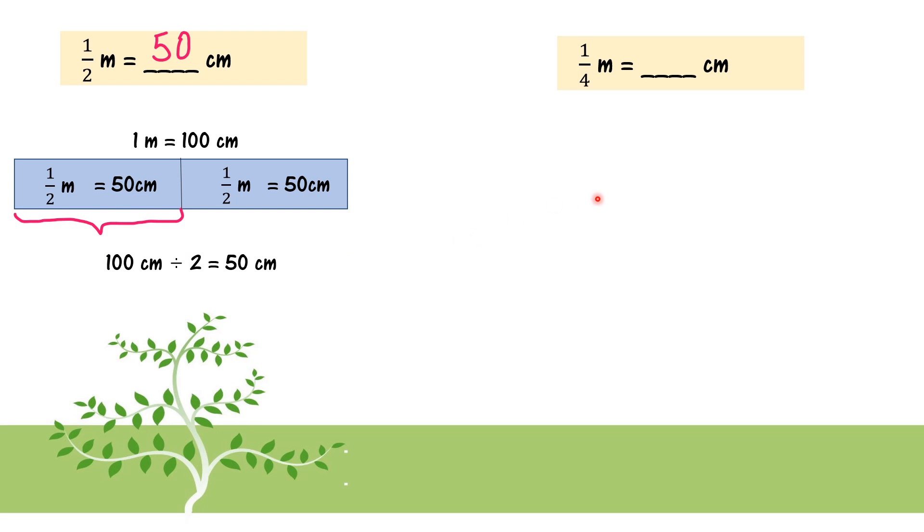Let's look at 1 over 4. I use the diagram for fraction also. This is 1 meter is equal to 100 cm. 1 over 4, I divide into 4 parts. Each part is 1 over 4 meter. 100 cm divided by 4. Why divide by 4? Because I divide into 4 equal parts.